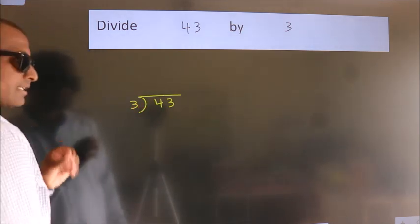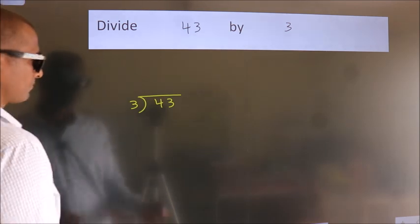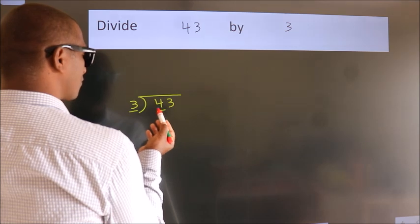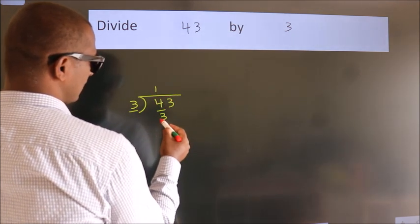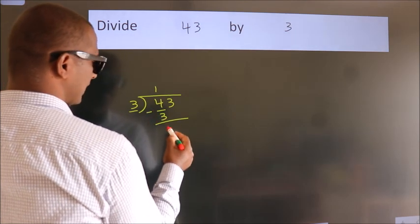This is your step 1. Here we have 4, here 3. A number close to 4 in the 3 table is 3 once, which is 3. Now we should subtract. We get 1.